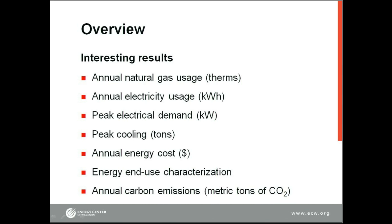What are some of the interesting results that you can expect from the calculator? Well, the main energy results are natural gas and electricity usage on an annual basis, as well as the building's peak electrical and cooling demands. The calculator predicts the annual energy costs, as well as an energy end-use breakdown — such as how much of the total energy use goes to heating, cooling, lighting, plug loads, and fans. The calculator also gives annual carbon emissions in metric tons of CO2.